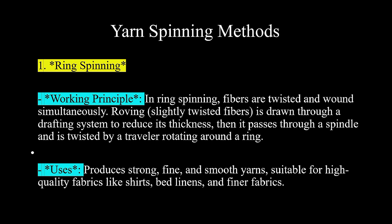The working principle of ring spinning is that fibers are twisted and wound simultaneously. Roving — slightly twisted fibers — is drawn through a drafting system to reduce its thickness, and then it passes through a spindle and is twisted by a traveler rotating around a ring. In ring spinning, three activities are done.